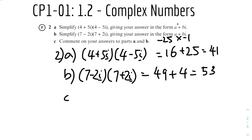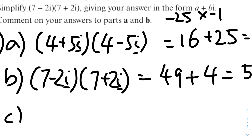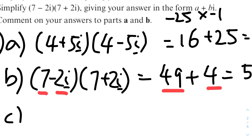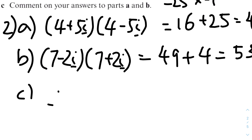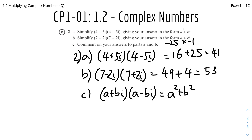Part C: comment on your answers to parts A and B. When you have a difference of two squares for a complex number bracket, the imaginary part cancels out, and you add the squares of both the real and imaginary coefficients. In part A: 4² + 5² = 16 + 25 = 41. In part B: 7² + 2² = 49 + 4 = 53. So (a + bi)(a − bi) = a² + b². This works because of the imaginary unit i.